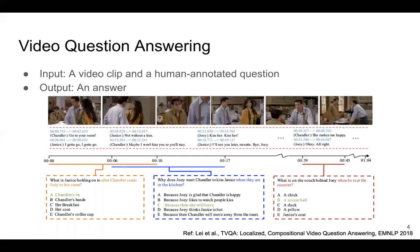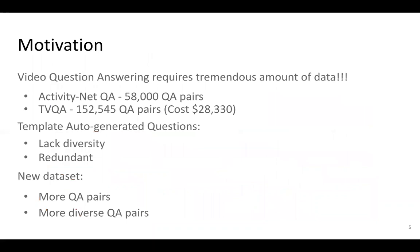I'll introduce our motivation. Before we get into it, I'd like to briefly introduce the Video Question Answering task. In Video Question Answering, the input is a video clip and a human-annotated question, and a video QA model decides the answer given these two inputs. We show an example from the TV QA dataset. However, training a successful Video QA model needs a huge amount of data.